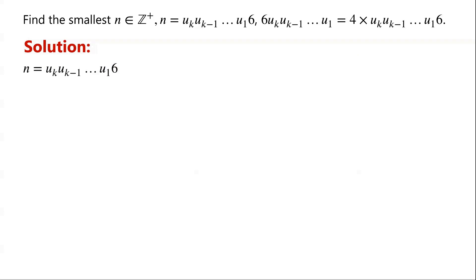To find n, first we need to determine the number of its digits, which is k+1, so we need to determine k. Then we need to find the digits u_k, u_{k-1}, ..., u_1. We are given that if the last digit 6 is erased and placed in front of the remaining digits, the resulting number is 4 times as large as the original number n. That is, 6, u_k, u_{k-1}, ..., u_1 equals 4 times n.